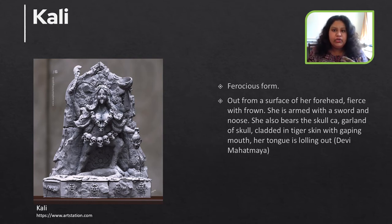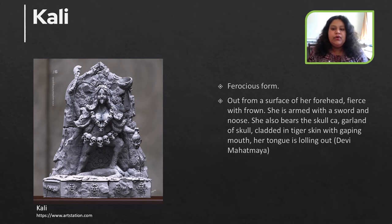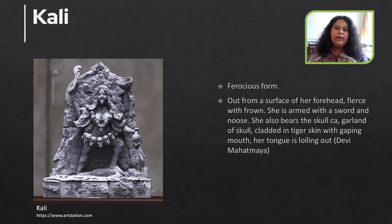There are other mythological stories related to the existence of Kali as well — this was just one of them. Iconographically, she is armed with a sword and noose. She also bears the skull cap and wears a garland of skulls. She is clad in tiger skin with a gaping mouth and her tongue lolling out. This description is available in the Devi Mahatmya.